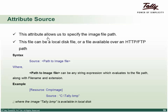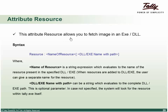The source attribute specifies the image path — local path like drive slash path, HTTP, or FTP. For example, C drive local hard disk has a file called tally.bmp. The resource attribute allows fetching an image from an EXE or DLL. Source fetches from local hard disk, HTTP, or FTP; resource fetches from EXE or DLL. The resource name can be a string expression evaluating to the resource name, and the DLL or EXE name with path is a string evaluating to the complete path.